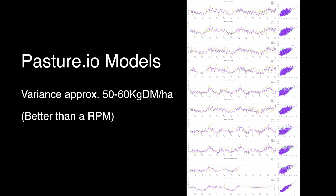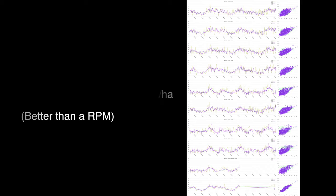Our satellite pasture measuring has a variance of around 50 to 60 kilos, so it's better than a rising plate meter when all the information — such as grazings and other paddock activities — is supplied along with the weather and the satellite imagery.